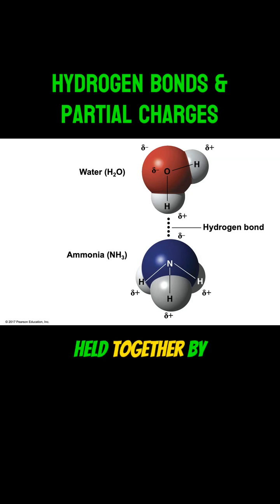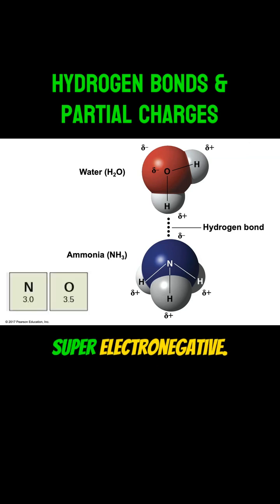Polar molecules are held together by polar covalent bonds. Oxygen and nitrogen are super electronegative, so they hog the electrons, creating partial negative charges shown by the negative delta signs.